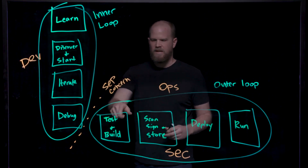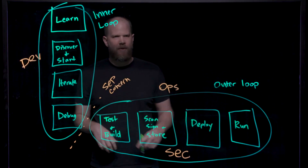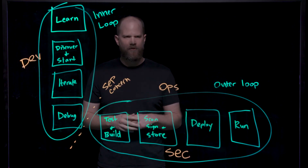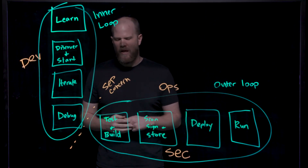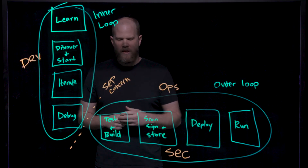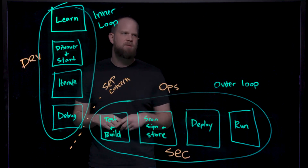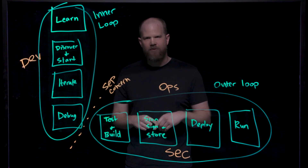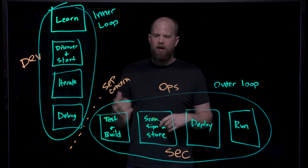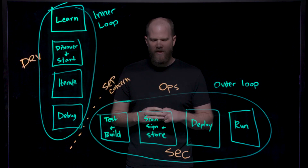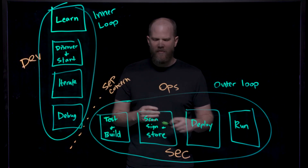Let's start with test and build. Test and build is all about running your code through your testing environment or unit tests and making sure it's acting as you thought it should. Building is all about a consistent build process that uses the build opinions defined by the operators and security team to make sure things are consistent and using blessed artifacts inside of the inner production or shared environment.